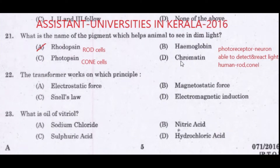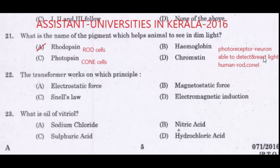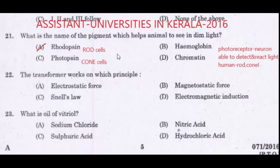We have two photoreceptors in the human retina. Photoreceptors are neurons that help detect and react to light. The human retina has two cells: rod cells and cone cells. The rod cell contains the pigment rhodopsin, and the cone cell contains photopsin.